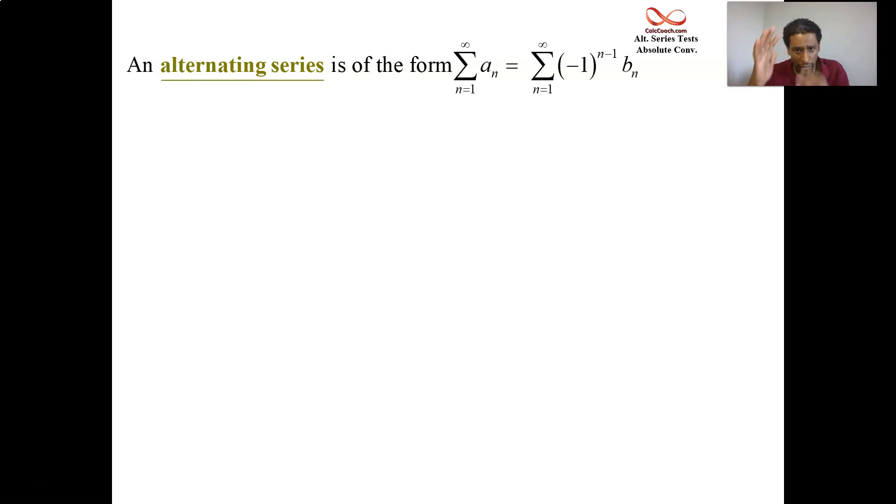Those b_n terms end up being important to help us figure out whether the series converges or diverges using the alternating series test. But it doesn't have to look exactly like (-1)^(n-1). It could be (-1)^n. The point is that the b_n part is the absolute value of a_n - it disregards signs. So an alternating series is one that has successive terms that have opposite signs.